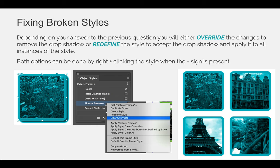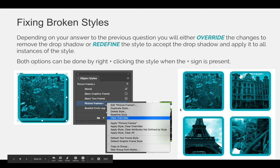Both options can be done by right-clicking the style when the plus sign is present. If you did not want the drop shadow, you would right-click the style that has the plus sign and choose to clear overrides — essentially saying 'oops, my bad' — and you can see on the right hand side it clears out the drop shadow and puts the original saved style back on all of the frames.